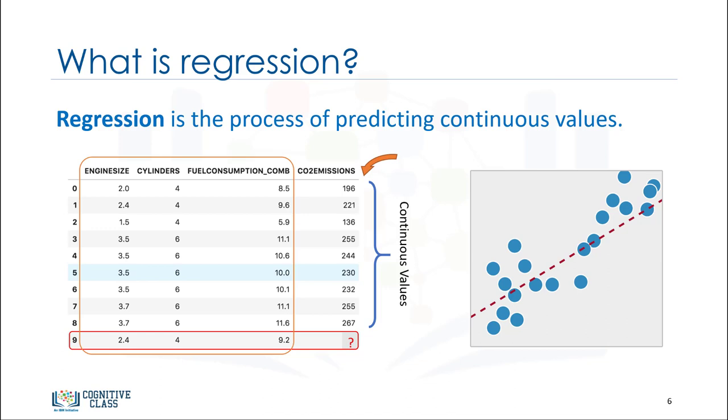Given this data set, you can use regression to predict the CO2 emission of a new car by using other fields such as engine size or number of cylinders.